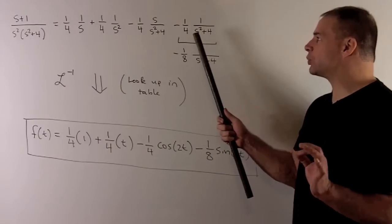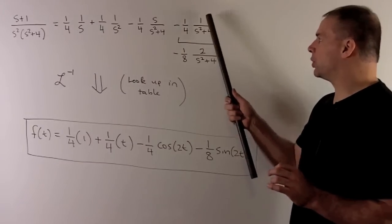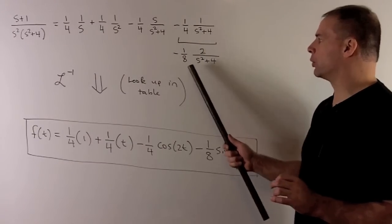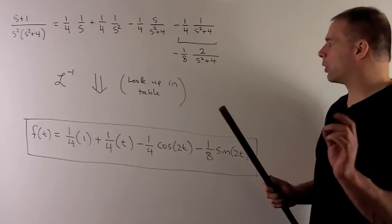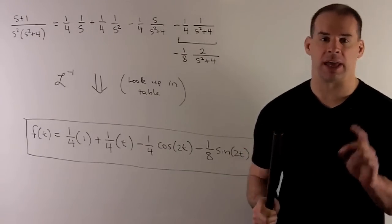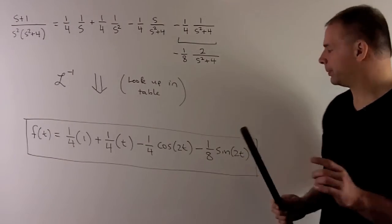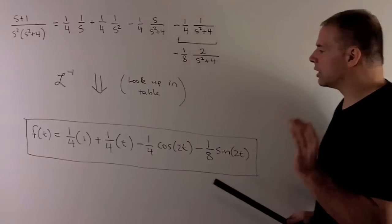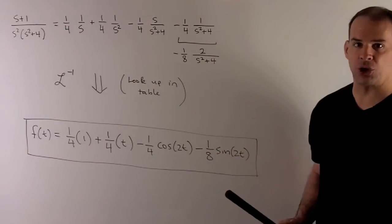And then, for our last one, we won't see this one in our list. We have to tweak it a little bit. So, if we put a 2 up on top, change our 1 fourth to 1 eighth, just multiplying by 2 over itself. What we're going to have is a over s squared plus a squared. And there, a will be equal to 2. That's going to go with sine of 2t. So, this is going to be the original function that gives us, when we take the Laplace transform, function s plus 1 over s squared times s squared plus 4.